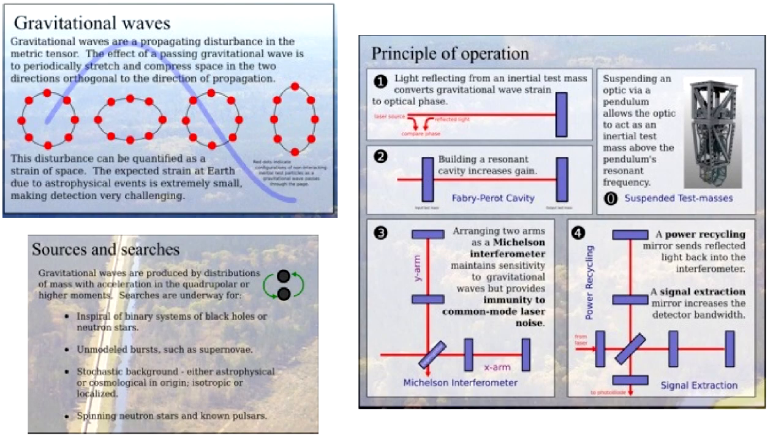Interferometers are widely used in research and industry for the measurement of small distances, changes in refractive index and surface irregularities. The Fabry-Perot interferometer was used by LIGO to increase the time for which gravitational waves can interact with light, enabling their detection.